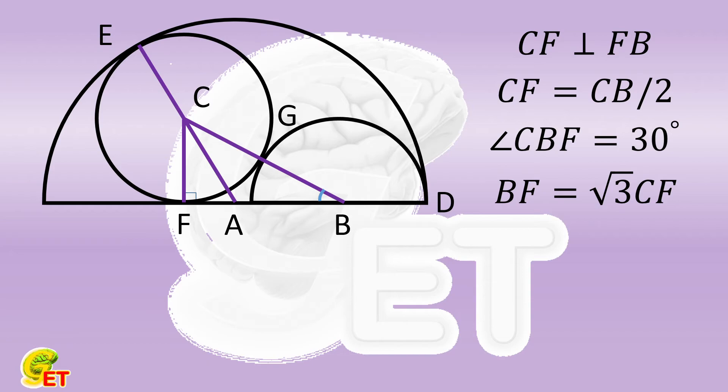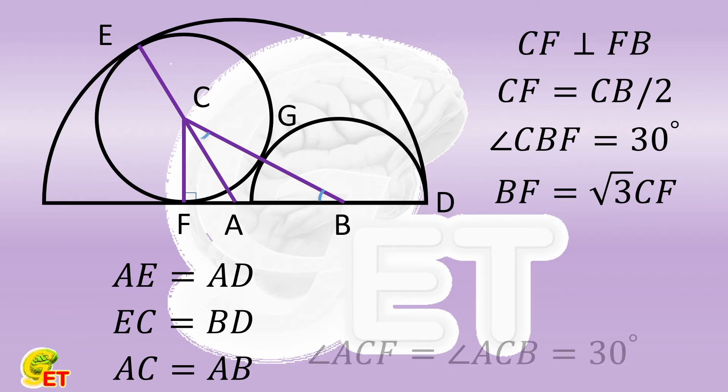On the other hand, because both AE and AD are the radius of the great semicircle, EC and BD are again equal. So AC is equal to AB. ABC is an isosceles triangle. So the angle ACB is also equal to 30 degrees.